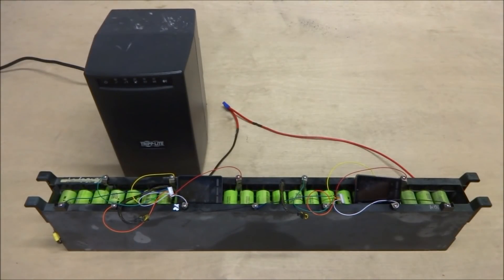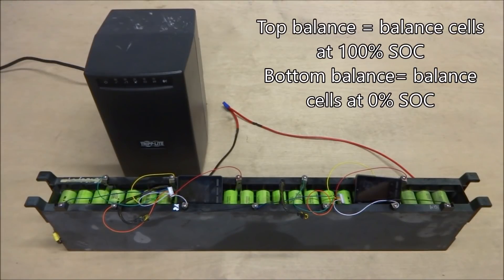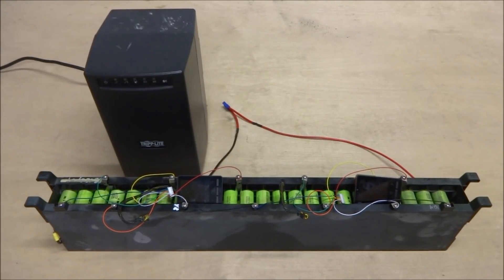Now there are two ways to balance batteries, either top balance or bottom balance. Most people typically do a top balance and this is also what I normally would do. However, I decided in this case to do a bottom balance. So this pack is currently completely discharged and balanced as best as I could get it at a low voltage of about 2.5 volts per cell.